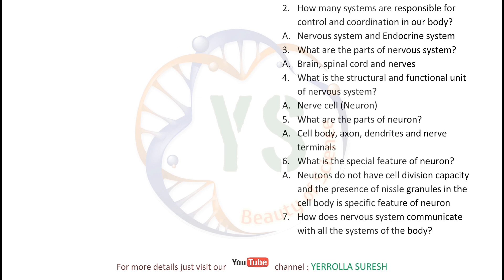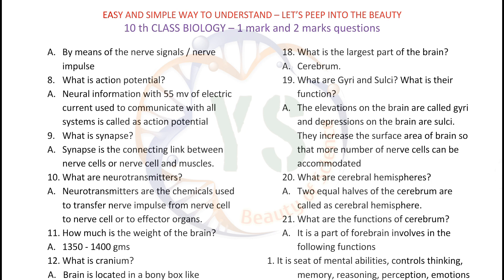What is the special feature of a neuron? Neurons do not have cell division capacity, and the presence of Nissl granules in the cell body is a specific feature of a neuron. How does the nervous system communicate with all the systems of the body? By means of nerve signals or nerve impulse.